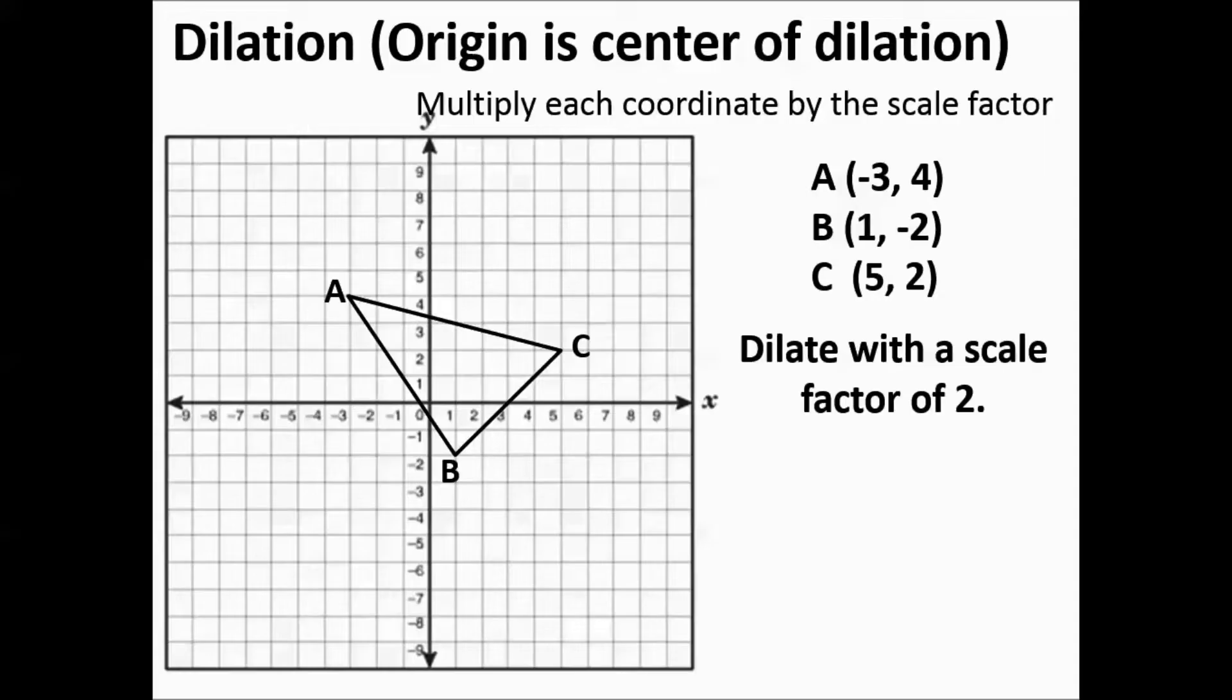And according to this all the sides, if it's a scale factor of 2, all the sides will be twice as long. Basically you take every X value, multiply it by 2, take every Y value, and multiply it by 2. So when you multiply point A, negative 3, 4, you multiply those out by 2, you get negative 6, 8.